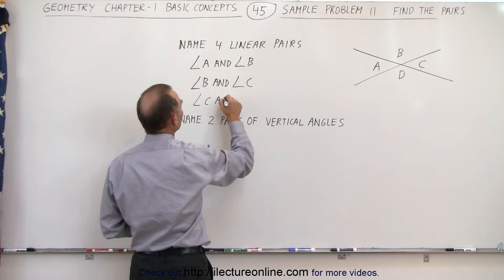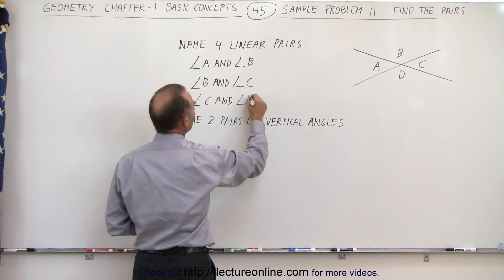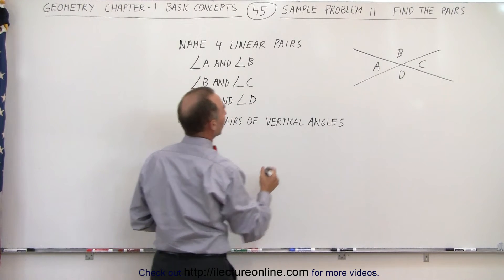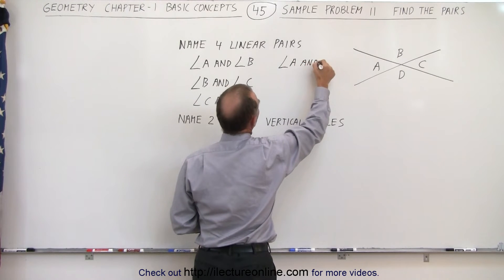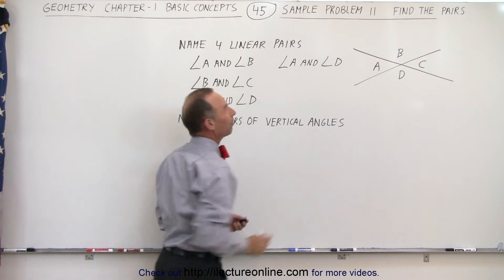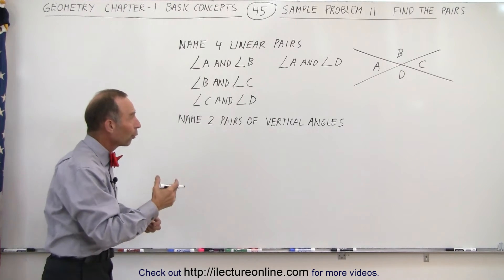And I think you begin to see the pattern that angle C and angle D also are linear pair and finally angle A and angle D. So those are the four linear pairs.